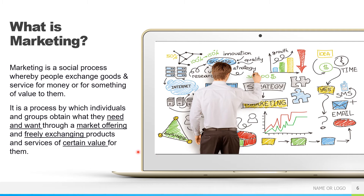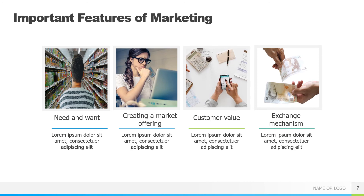So marketing is a process involving: one, a need and want; two, a market offering; three, free exchange of goods and services; and four, it should be of certain value for both buyer and seller. These are the key features of marketing that we will now understand in detail.